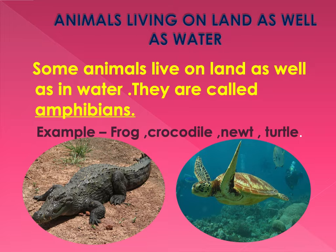Animals living on land as well as in water. Some animals live on land as well as in water — they are called amphibians. Some of the examples are frog, crocodile, newt, turtle, etc.